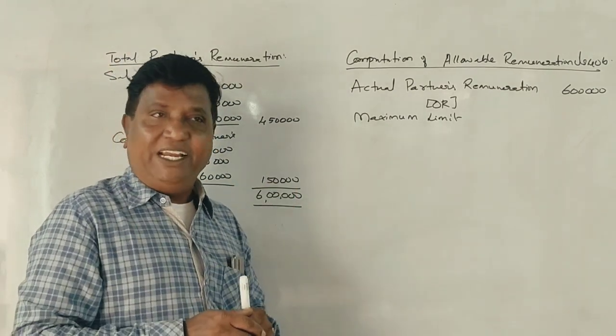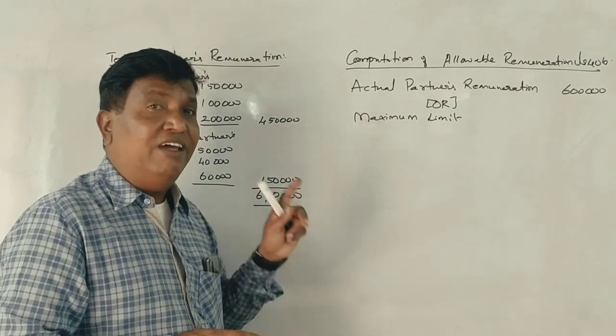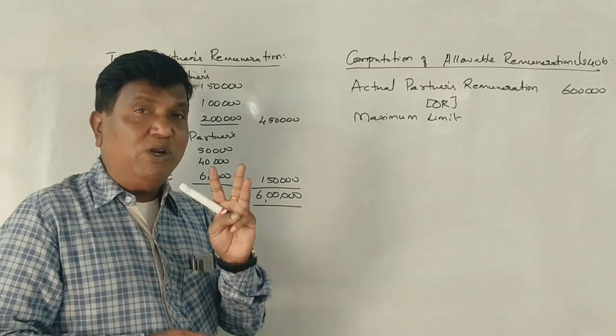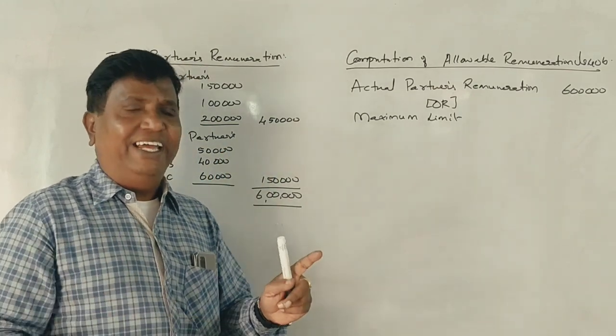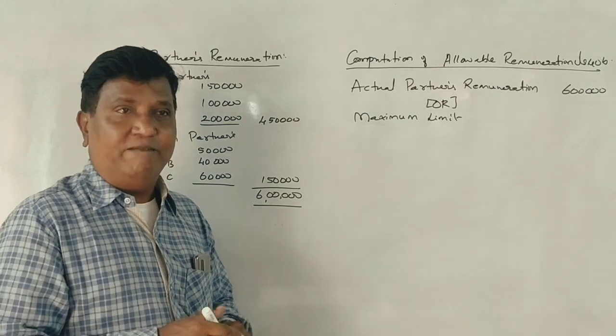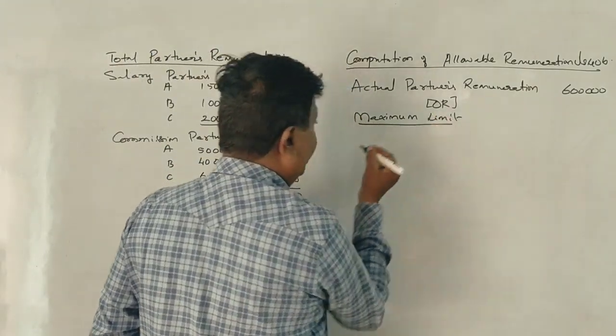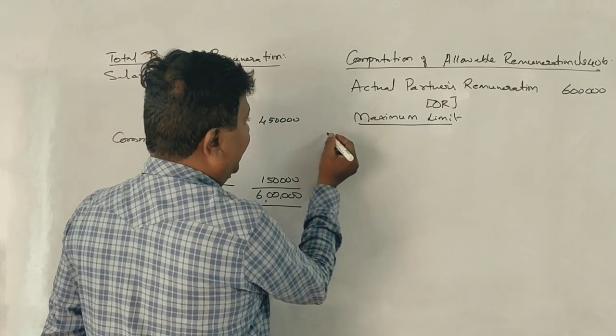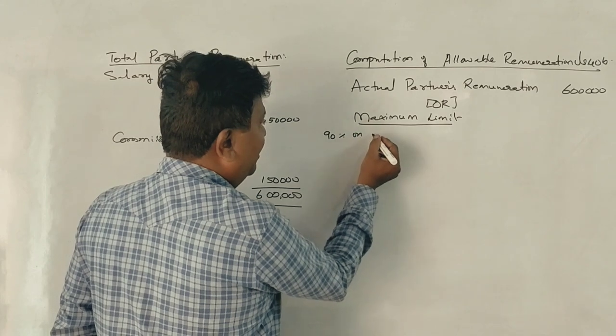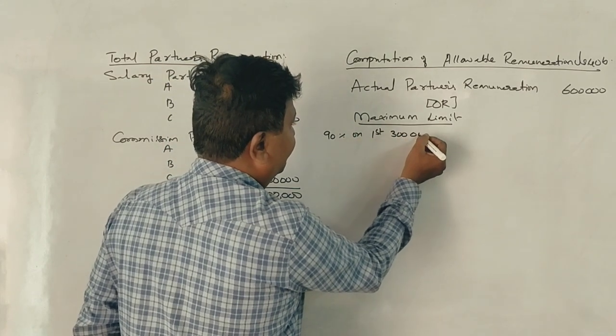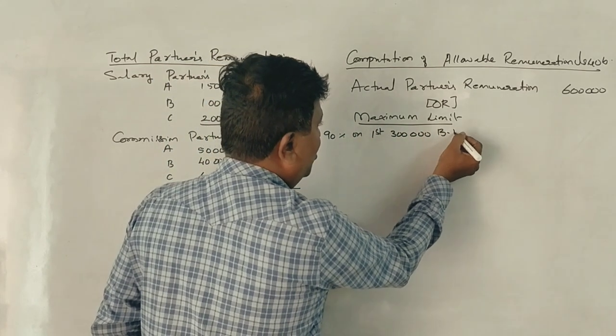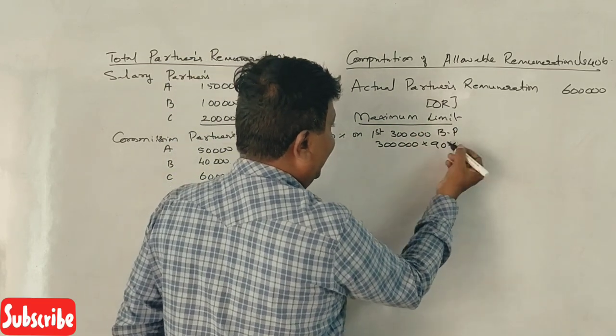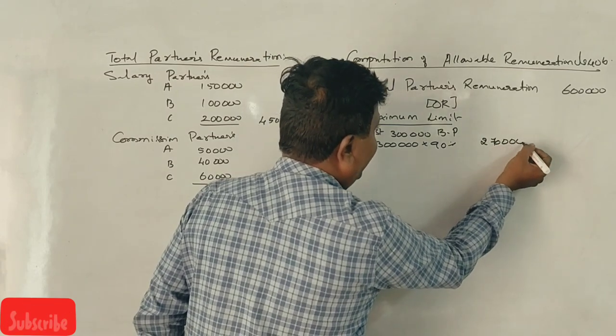The first rule is that book profit is more than. Maximum limit is 90% on first 3 lakh rupees book profit. The first 3 lakh rupees, 90% is to calculate. That is 2,70,000 rupees.